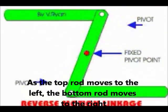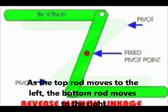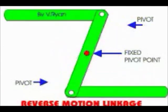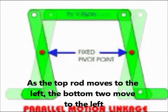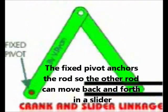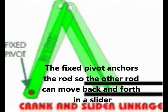There are four main types of linkages. In a reverse motion linkage, as the top rod moves to the left, the bottom would move to the right. In a parallel motion linkage, as a large rod moves to the left, the two small rods at the bottom move to the right. In a crank and slider linkage, the movement goes forward and backwards in the slider.